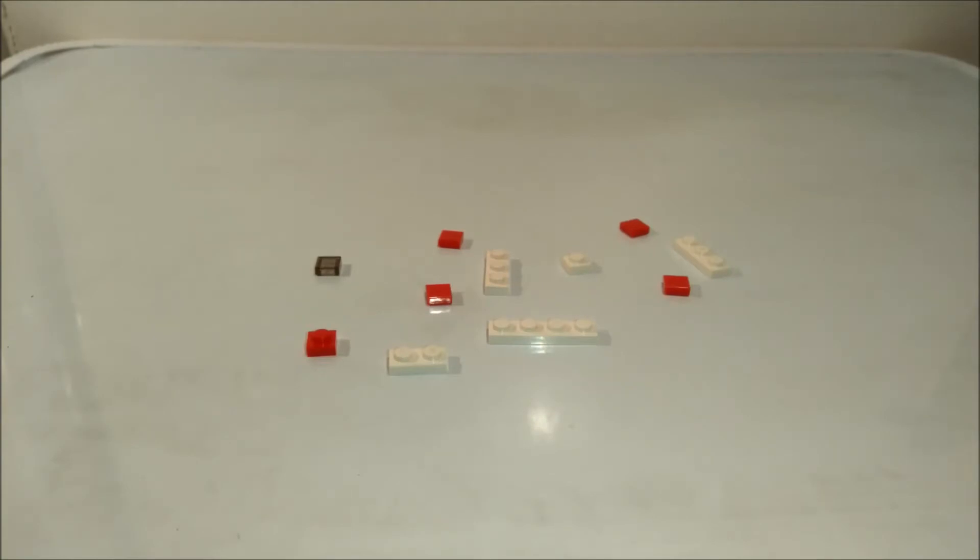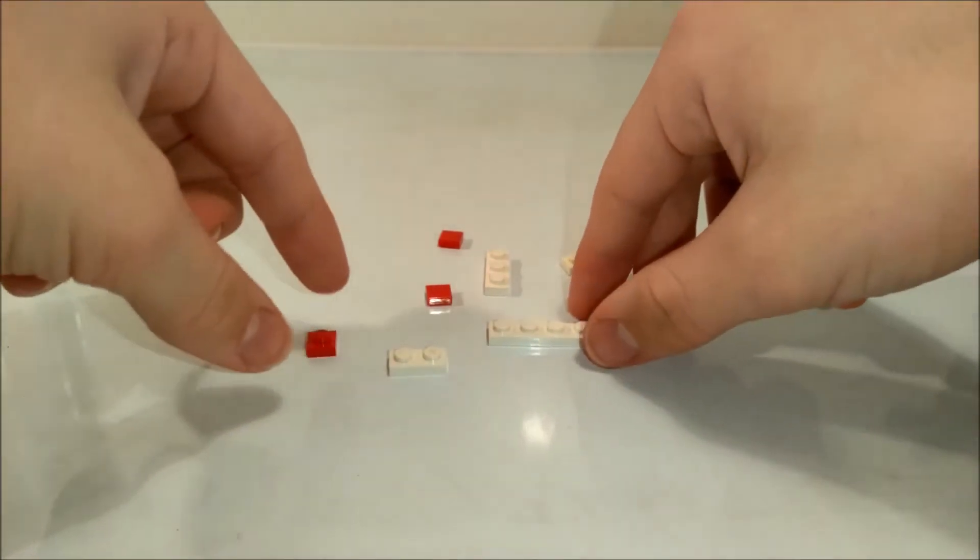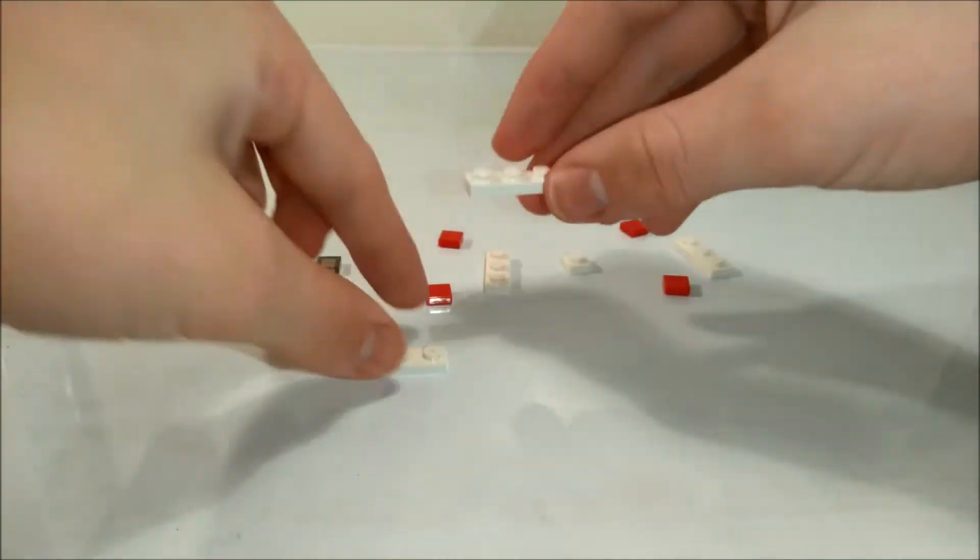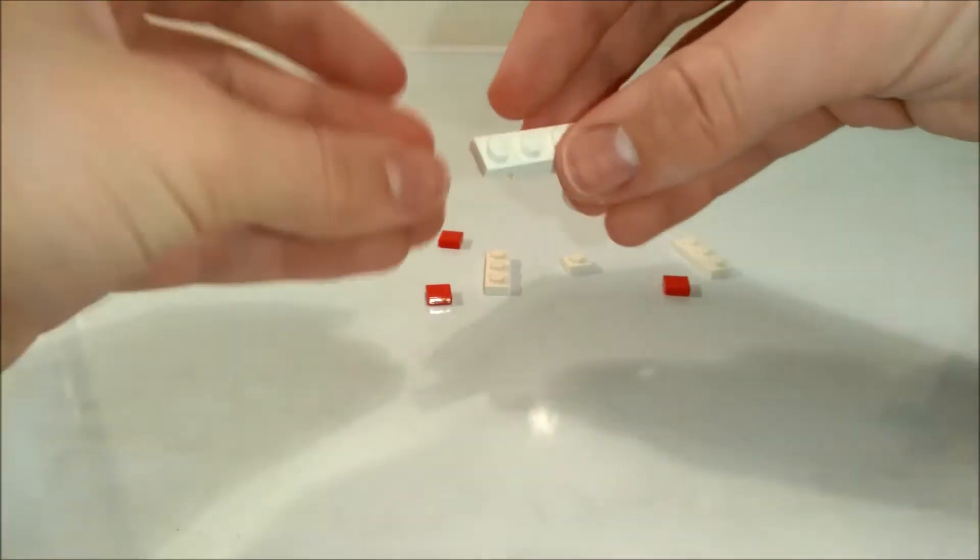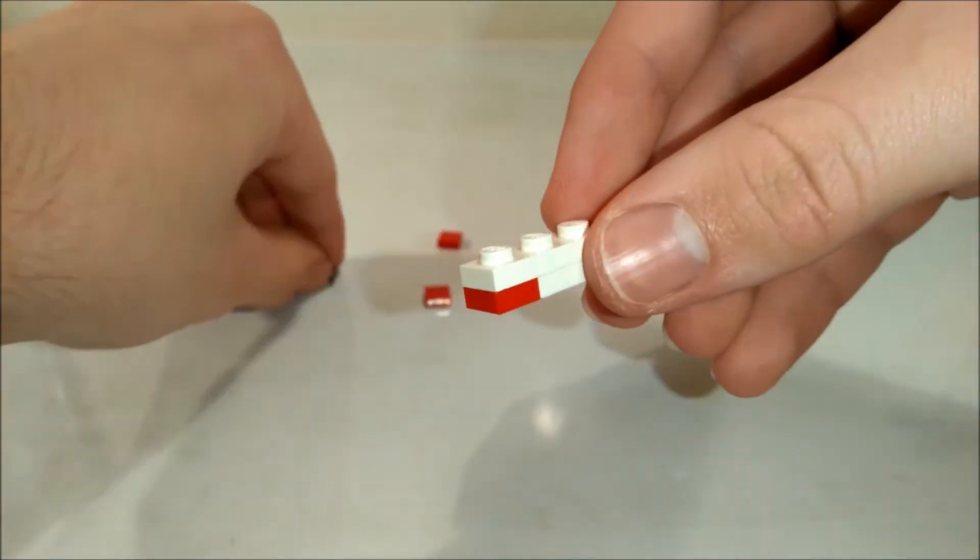Today's build consists of 11 pieces. To begin, we're going to take a 1x4 white plate, on the bottom of it a 1x2, and on one end a red 1x1.